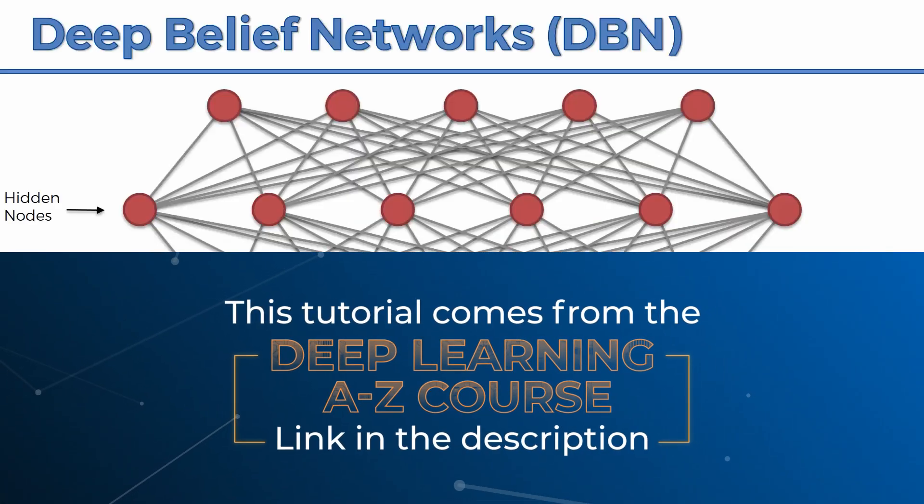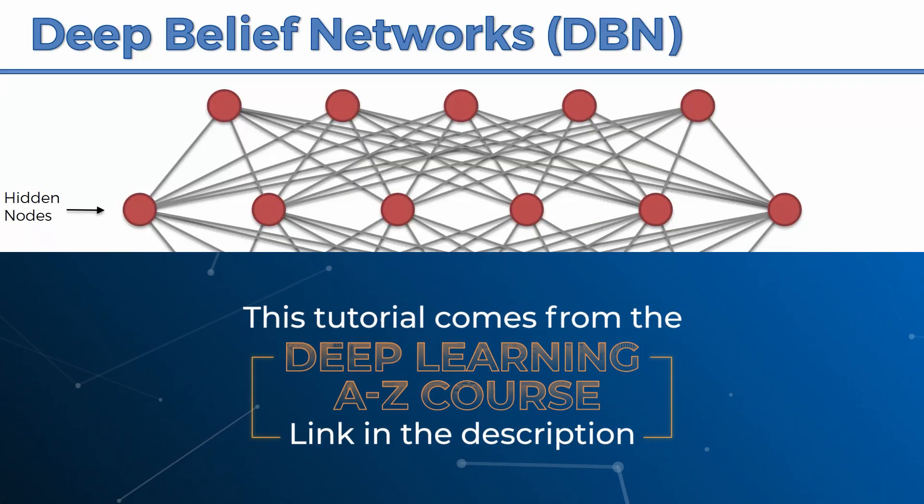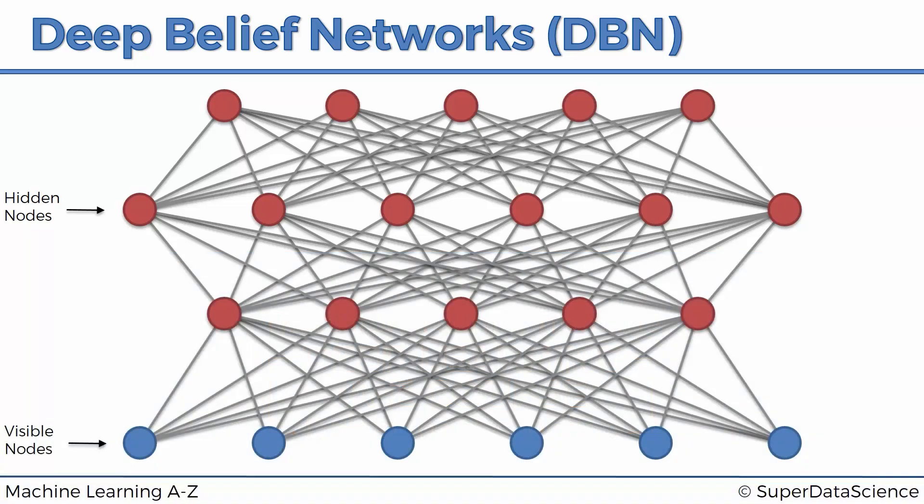A deep belief network comes to be if you stack on top of each other several restricted Boltzmann machines or RBMs. Here you can see the first RBM, the second RBM, the third RBM. Basically, the outputs or the hidden layer of the first RBM is the input of the second RBM, and then the hidden layer of the second RBM is the input of the third RBM.